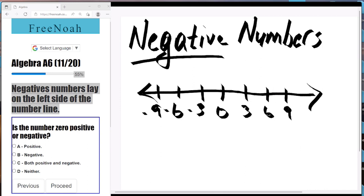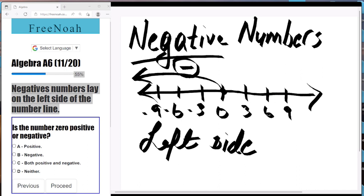So anything, any integer on the left side of zero is negative. Okay, left side of zero. Perfect.